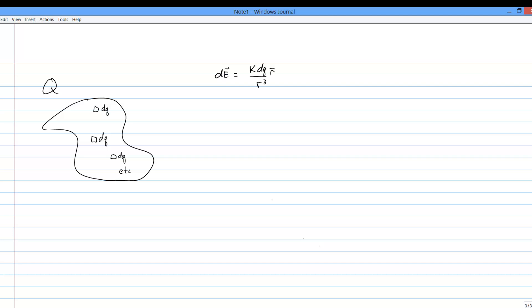Some infinitesimal bit of the total field dE comes from each dq. And note that every dq might have a different r vector.